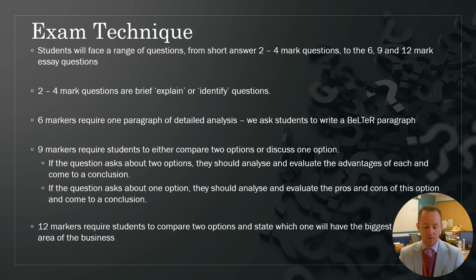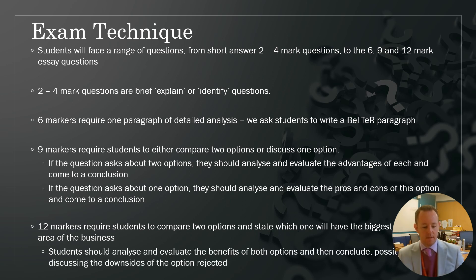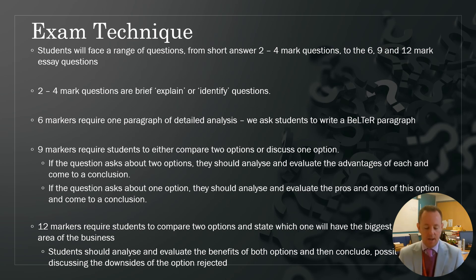For the 12-mark questions, students must always compare two options. The question will ask which of the two options will have the biggest impact on a particular area of the business — for example, profit, productivity, or efficiency. They should analyse and evaluate the benefits of both options and then conclude. In that conclusion, they should discuss some of the downsides of the option they rejected, explaining why they believe their chosen option has the bigger impact and why the second option may not have been as impactful.